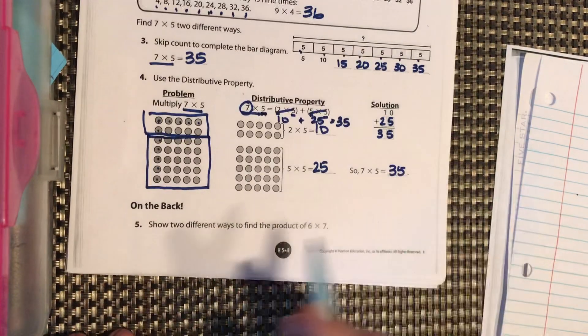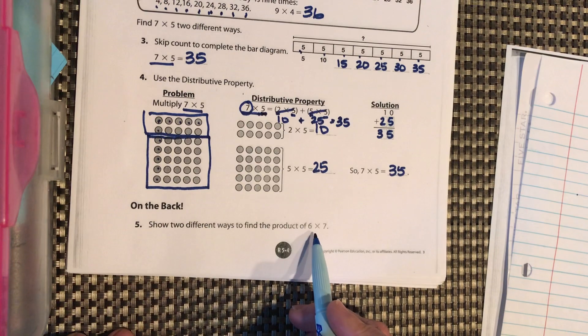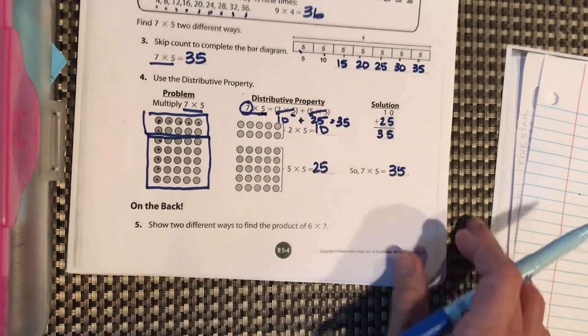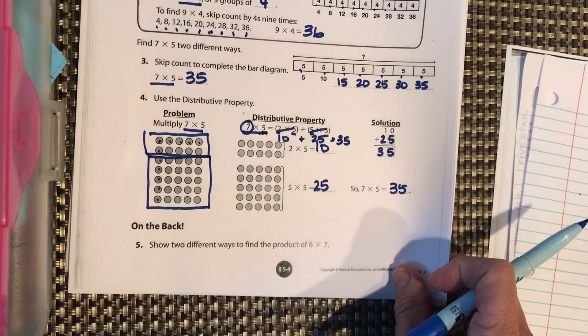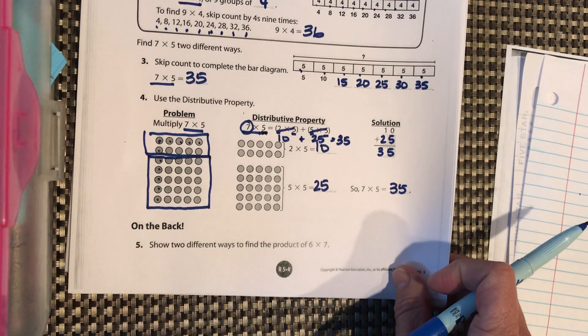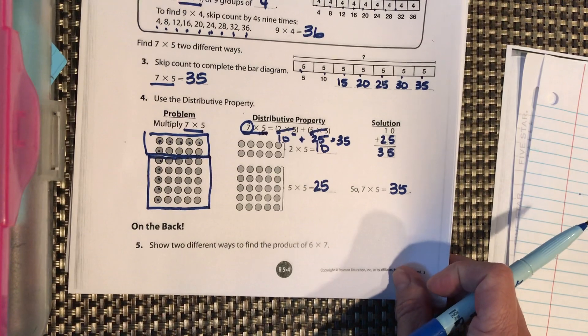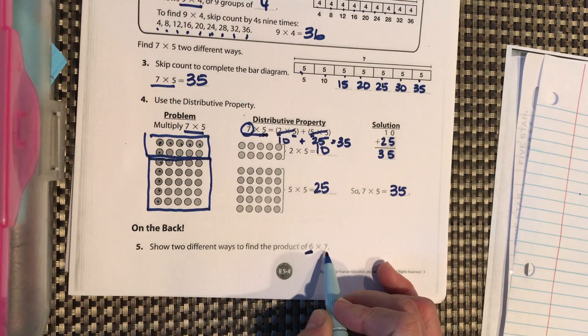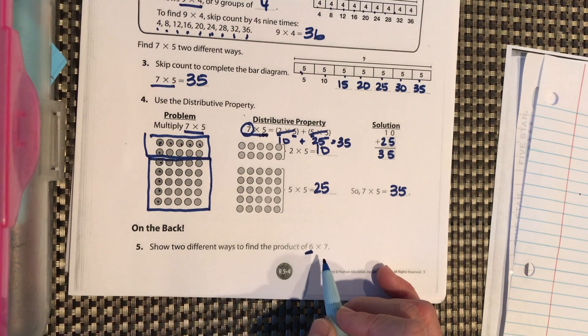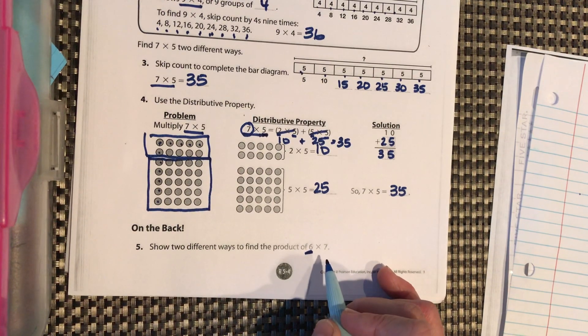Okay? On the back, show two different ways to find the product of 6 times 7. So I want you to pause that. You can use a bar diagram. You can skip count. Not very easy by 6s or 7. Or you can use the distributive property and either break down the 6 or break down the 7. So pause it and go ahead and do that.